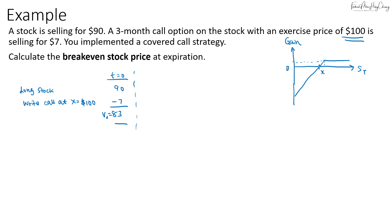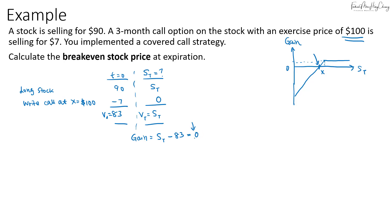To calculate the break-even price, remember it occurs at a point below the exercise price, meaning the call option cannot be exercised. With a call payoff of zero, we need to find the spot price St such that the gain equals zero — that is, the spot price minus the initial value equals zero. So the break-even spot price equals $83.